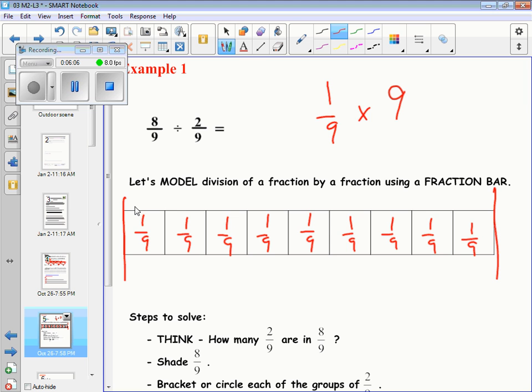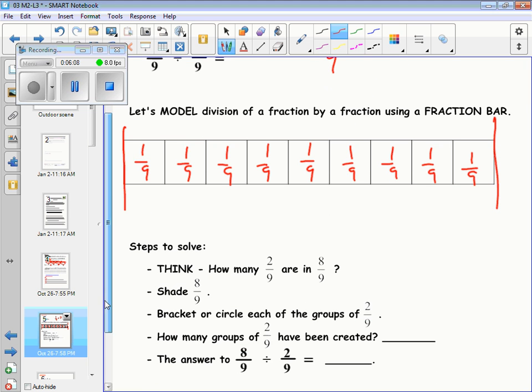Alright, now we'll go back to the example. We're going to shade 8 out of 9. Each time you shade it, it's worth a ninth. That's 1 ninth, 2 ninths, 3 ninths, 4 ninths, 5 ninths, 6 ninths, 7 ninths, 8 ninths. That's all I'm going to shade. That's now representing 8 ninths.